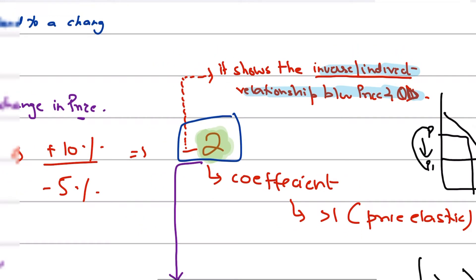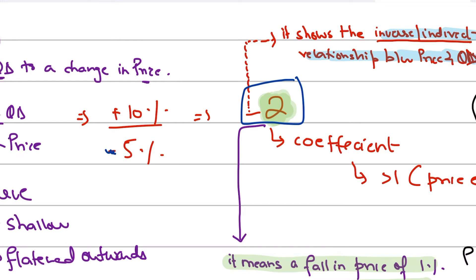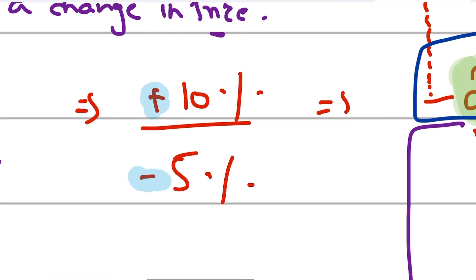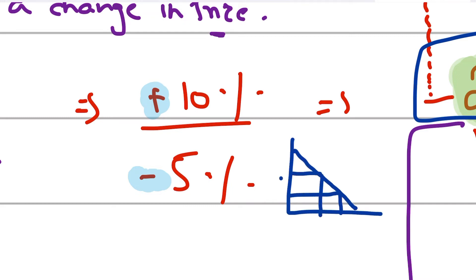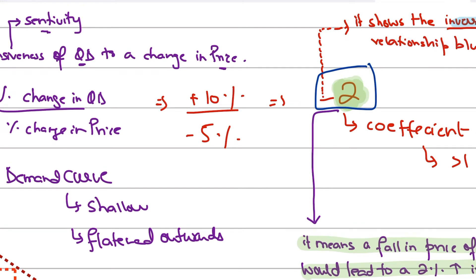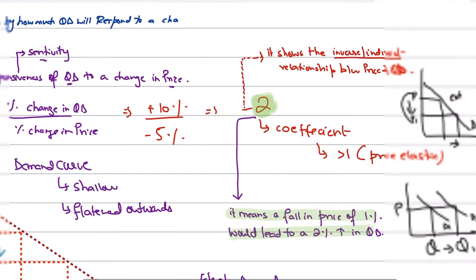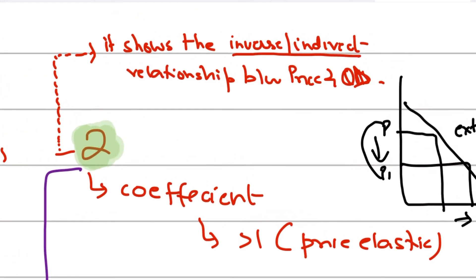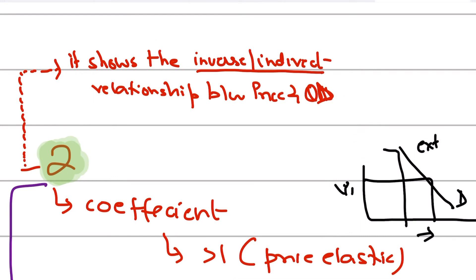That is why the value of PED will always come with a minus sign — it always denotes the inverse or indirect relation between price and quantity demanded. The minus sign simply tells you there is an inverse relation. Now, if the numerator is greater than the denominator, the value will obviously be greater than 1.